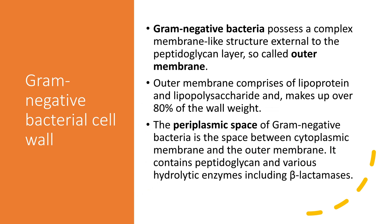Now we will talk about the gram negative bacteria cell structure. Gram negative bacteria also have a peptidoglycan layer outside the cell membrane, but this layer is just thin — it may be one or two peptidoglycan layers, so it is one to two layers in thickness. In gram positive bacteria, if you remember, it has 10 layers and comprises about 80% of the bacterial cell wall. But in gram negative bacteria, very little peptidoglycan is present — just one to two layers.